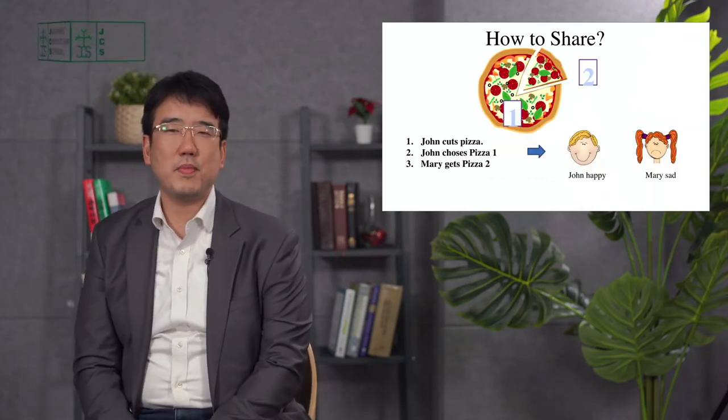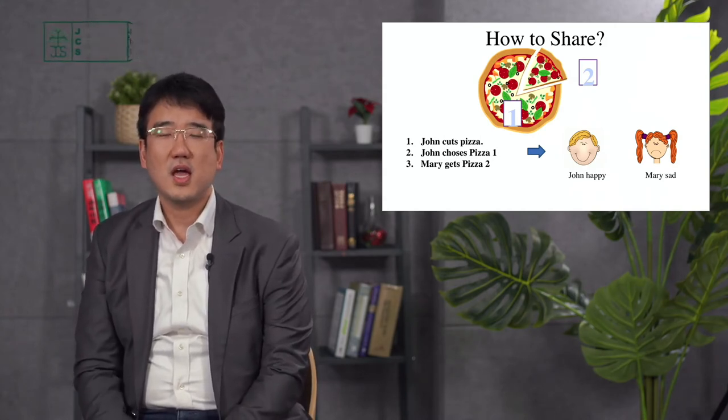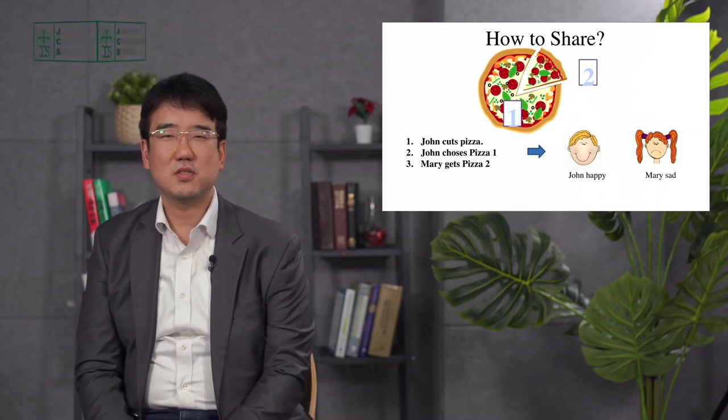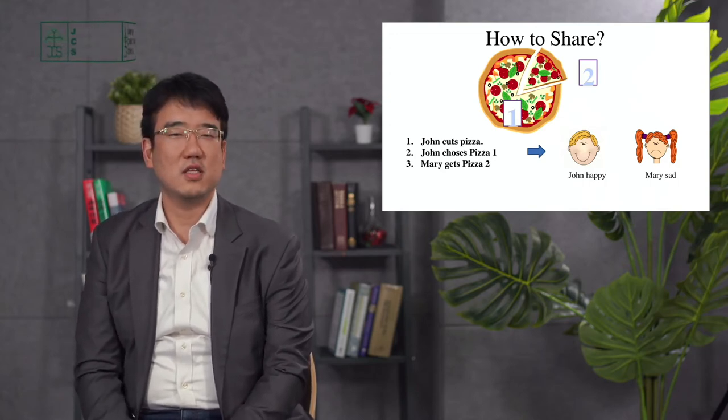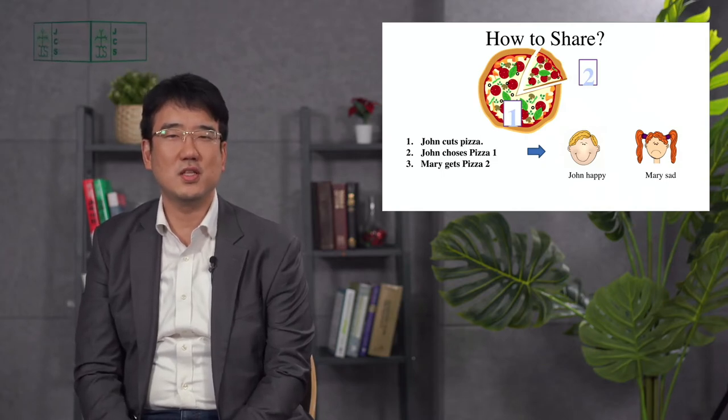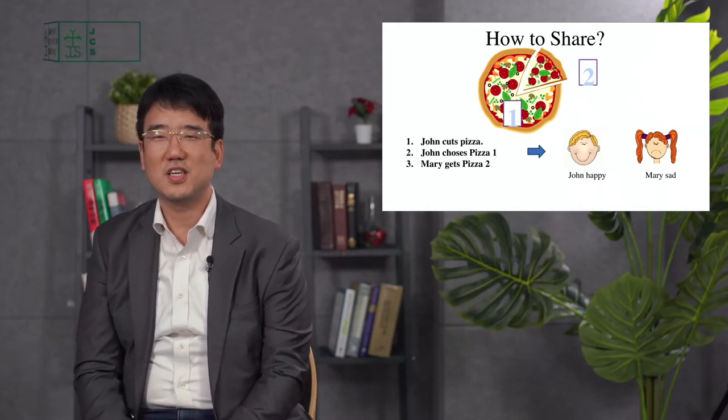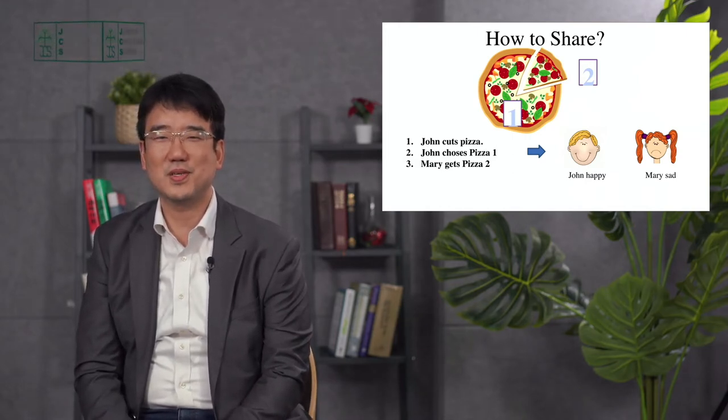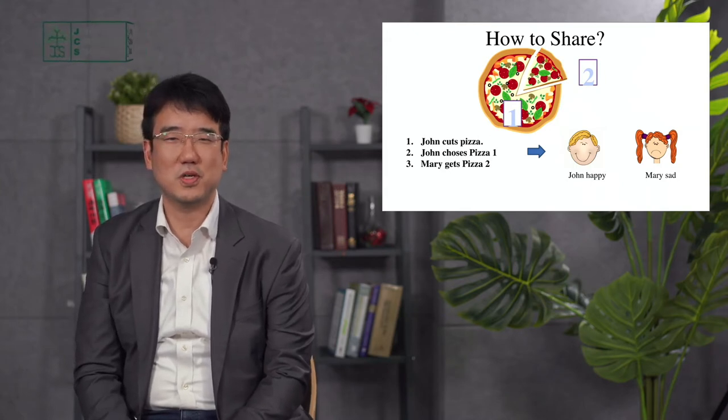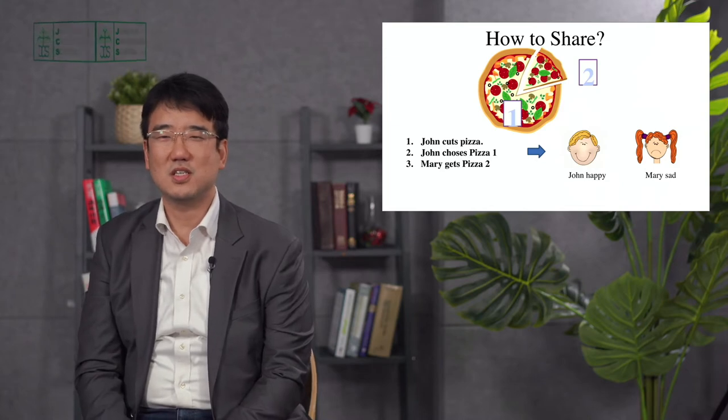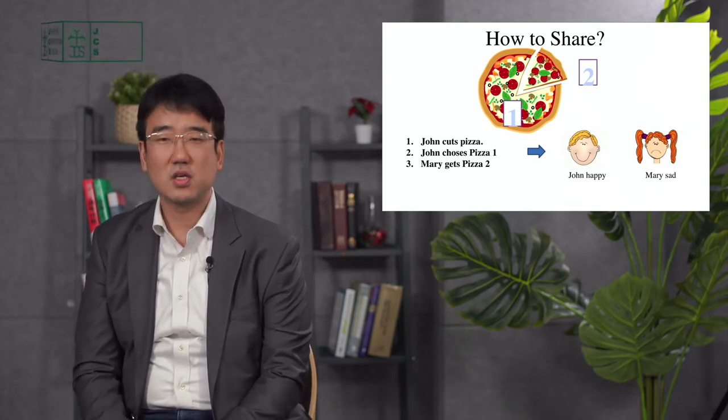Let's say John and Mary are having a pizza together and we want to cut this pizza so everyone's happy. So let's say John cuts the pizza and then John cut it like this and then what if John chooses pizza one then Mary has to get pizza two. That doesn't seem right because John got to cut the pizza and then he got to choose the one first so of course he's going to choose the bigger one. Mary doesn't have a choice and she has to stay with pizza two so that doesn't seem fair. So basically justice is what we think of as being fair or not fair. Right? So that's not fair.